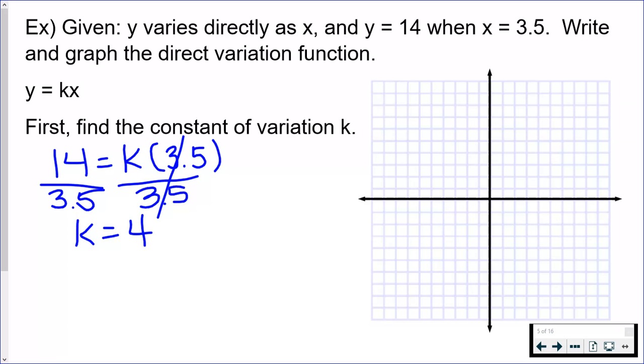And 14 divided by 3.5 is 4. Now please do not circle this and say that the answer is k equals 4. I have to write the direct variation function. And you're pretty much done with all of your work. You just need to know to write it.